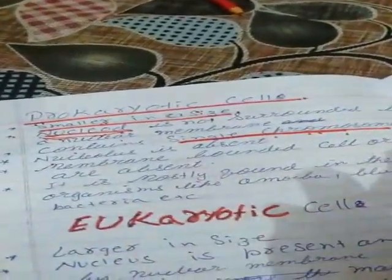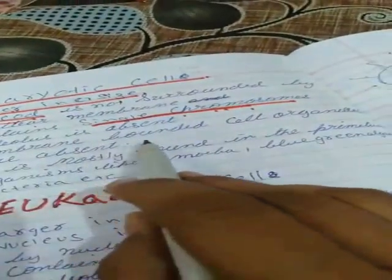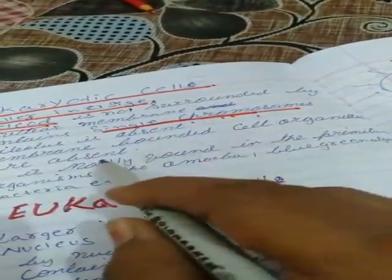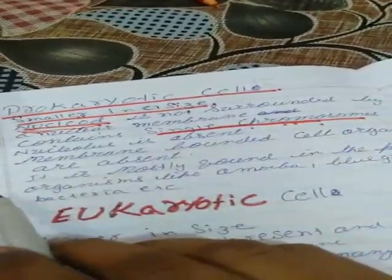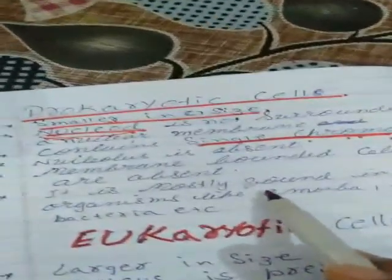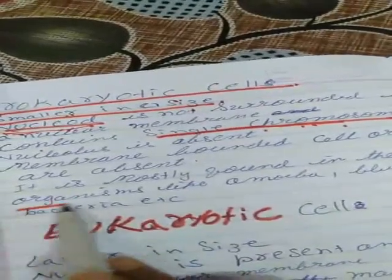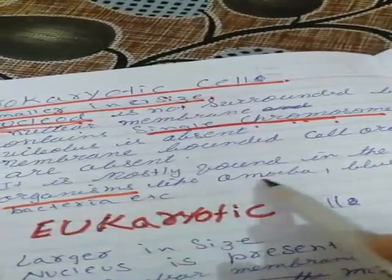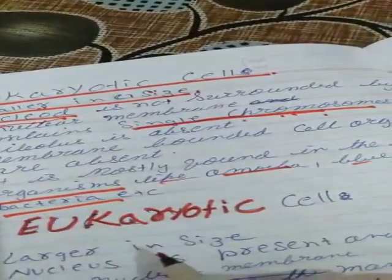The nucleolus is not present inside the nucleus — it is absent. Next: the membrane-bounded organelles are absent; organelles do not have specific structures and are not membrane-bounded. Prokaryotic cells are mostly found in primitive organisms like amoeba, blue-green algae, and bacteria.